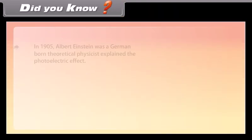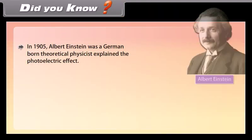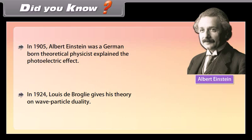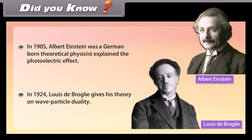Did you know? In 1905, Albert Einstein, a German-born theoretical physicist, explained the photoelectric effect. In 1924, Louis de Broglie proposed his theory on wave-particle duality.